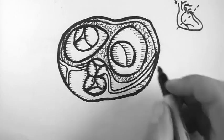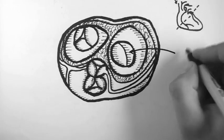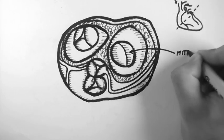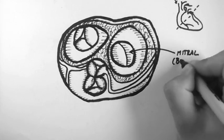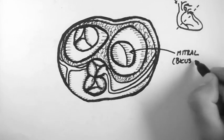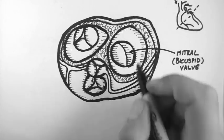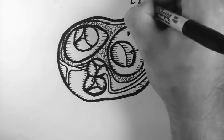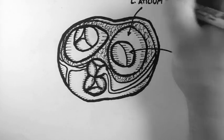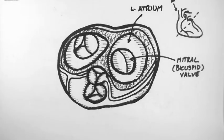So here's our first valve here. And this is the mitral valve. It's also known as the bicuspid valve because it has two cusps. It lies between the left atrium and the left ventricle. And so here we're actually looking into the left atrium.